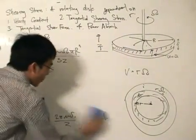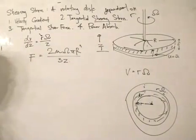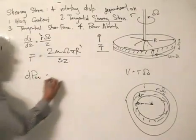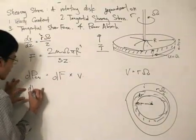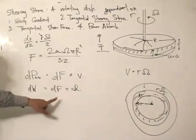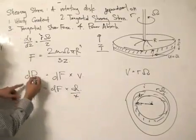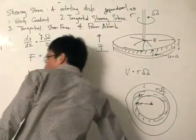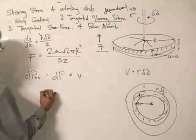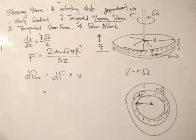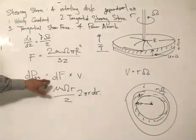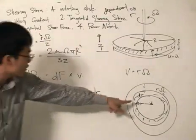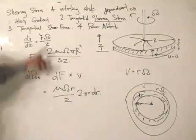Now for the power absorbed. Power is the rate of change of work. The differential form is dP equals dF times velocity. A small change in work is dF times distance, and dividing both sides by time gives dP equals dF times velocity. We substitute dF equals mu·r·omega/Z times 2·pi·r·dr, which is the small tangential shearing force, multiplied by the velocity, where the velocity at radius r is omega·r.